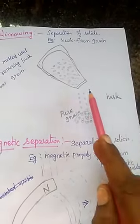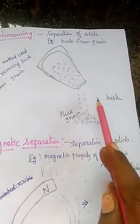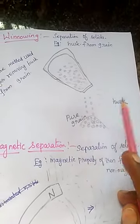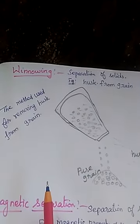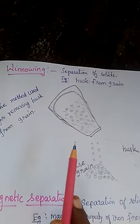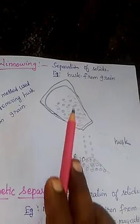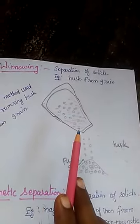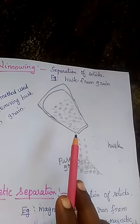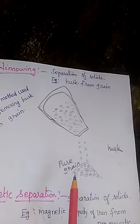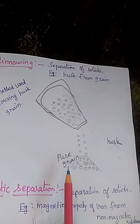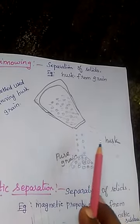Husk is very light. In the presence of wind, dropping the mixture slowly from a height — that is how winnowing is done. The pure grain stays close by, and the husk is carried far away.